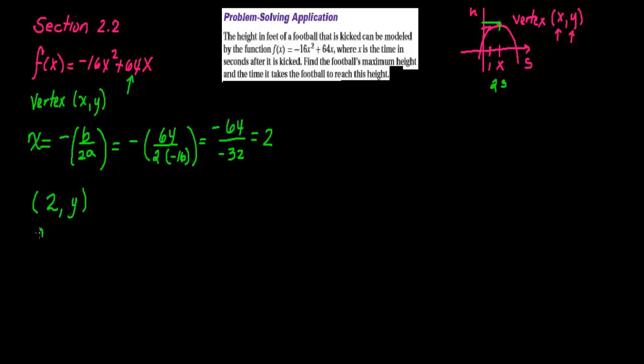We take the original function, which is f of x equals negative 16x squared plus 64x, and we evaluate it for that x-value that we found, which is 2. So anywhere there's an x, you plug in 2 plus 64 times 2. That equals negative 16 times 4 plus 128, and that will give you 64.